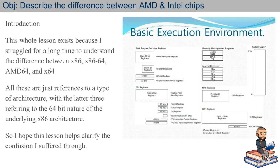Basically, all these are just references to a type of architecture, with the latter three referring to the 64-bit nature of the underlying x86 architecture. So x86-64, AMD64, and x64 are without a doubt referring to the 64-bit nature of a computer system — but these three do not exist without the underlying x86 architecture.